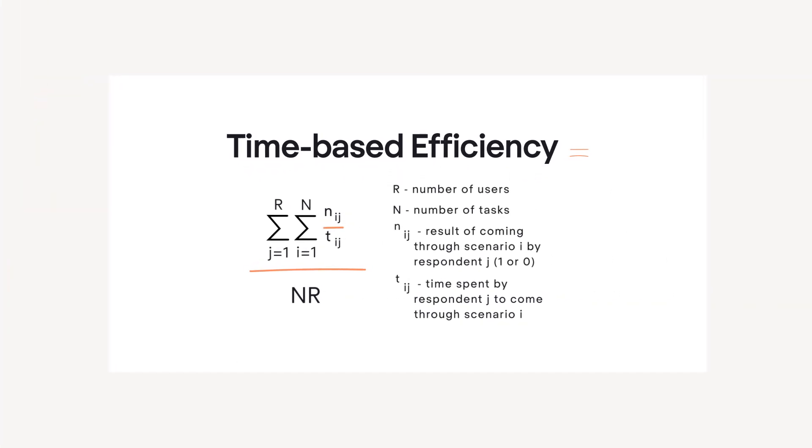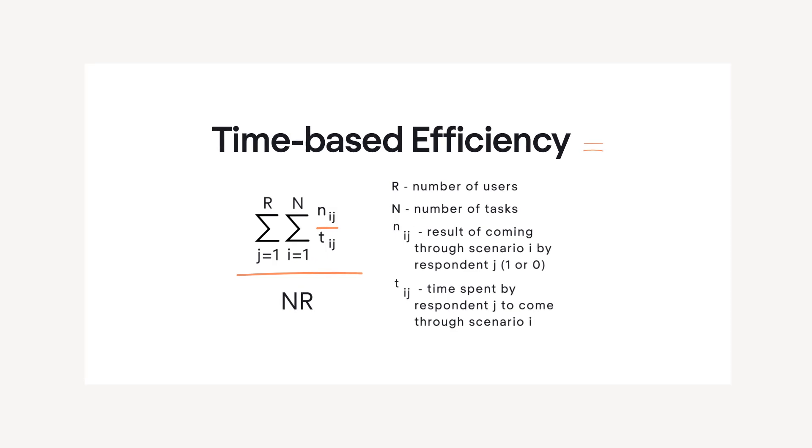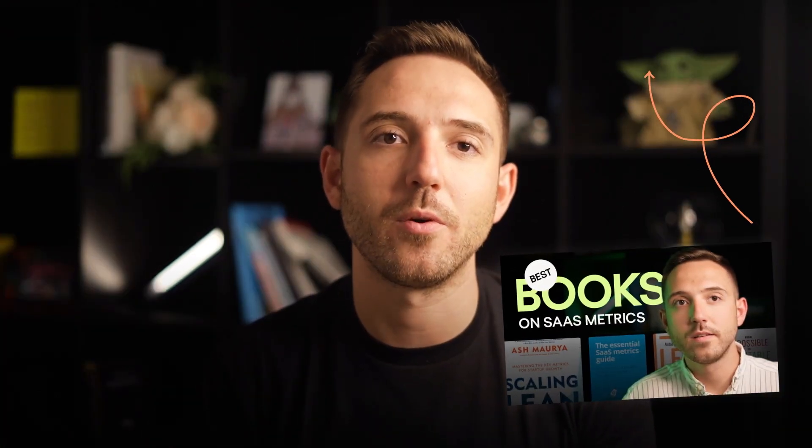Our next metric is efficiency. One of the most basic ways to measure it is time-based efficiency, which combines task time and success score. The formula for it is far more complex than the previous ones, and it would take too long to cover in one video. If you're interested, you can check our recommendation list on the best books on SaaS metrics and start your deep dive from there. Or just leave it to the professional UX designers. For now, let's move to the key satisfaction metrics.